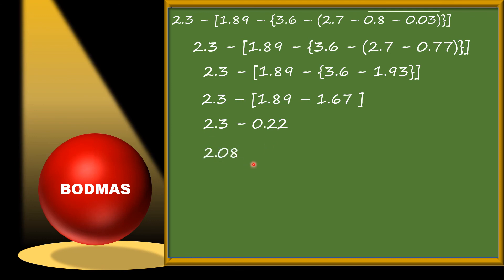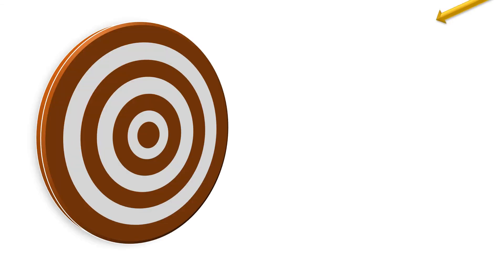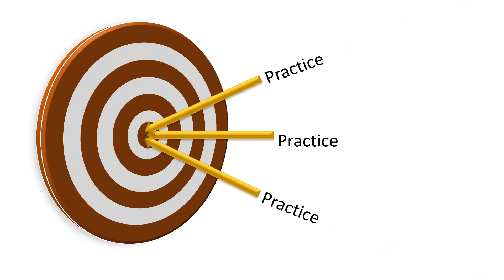Simplification is very easy — just follow the rules: DMAS, BODMAS, and the sequence of brackets: line bracket first, then small, then curly, then big. My dear students, simplification is very easy, but what you need to do? Practice, practice, and practice.